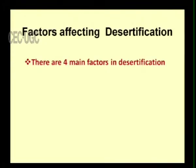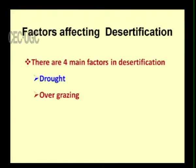There are four main factors responsible for desertification. The first one is drought — the loss of water causes havoc on the ecosystem, leading to desert conditions. The second factor is overgrazing.